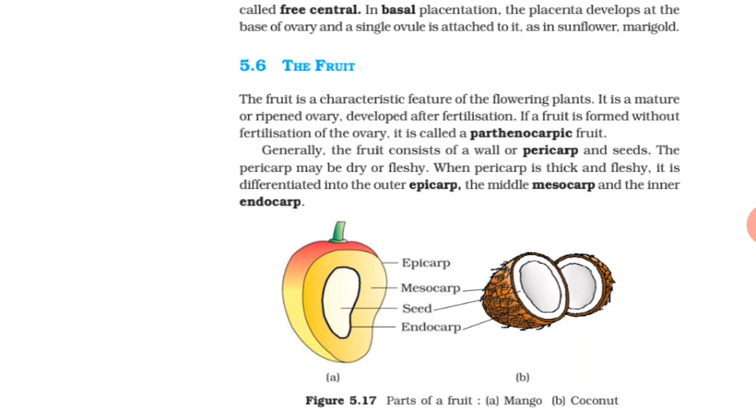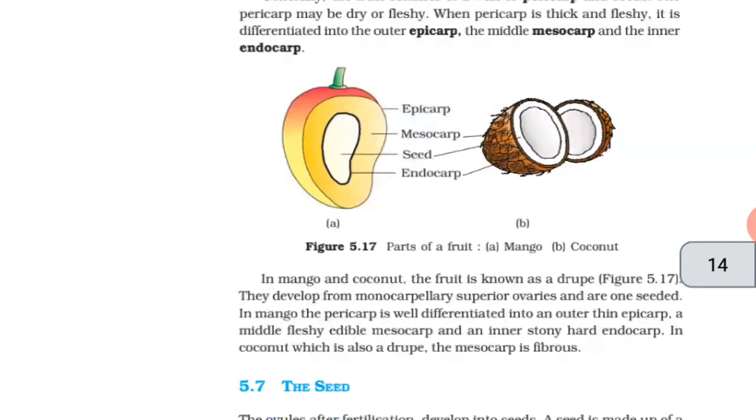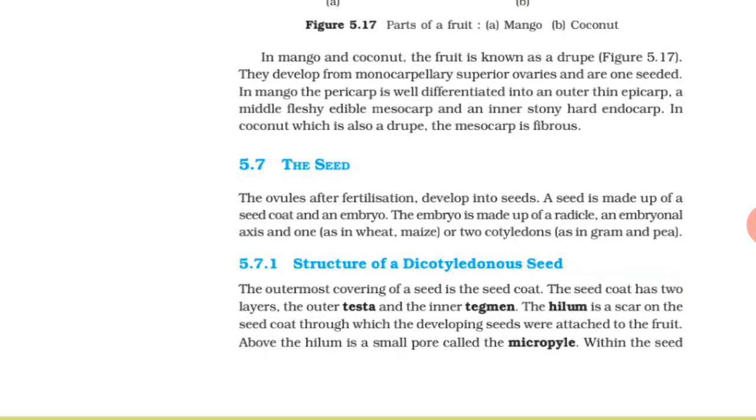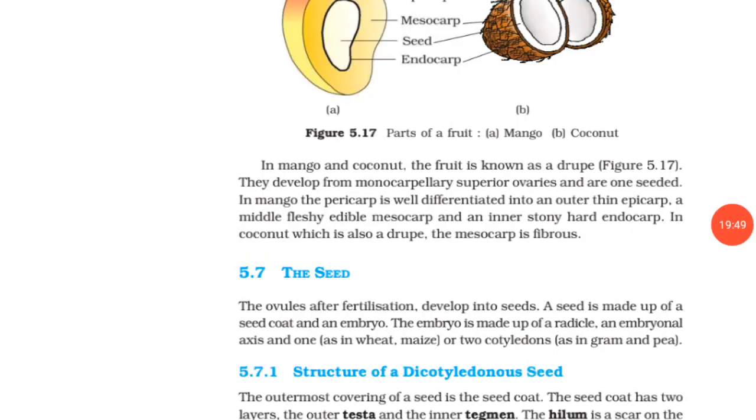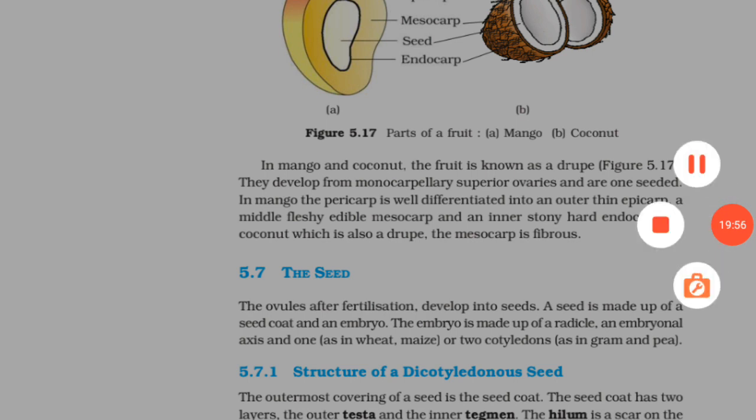When pericarp is thick and fleshy, it is differentiated into the outer epicarp, the middle mesocarp and the inner endocarp. In mango and coconut, the fruit is known as a drupe. They develop from monocarpillary superior ovaries and are one-seeded. In mango, the pericarp is well differentiated into an outer epicarp, a middle fleshy edible mesocarp and an inner stony hard endocarp. In coconut, which is also a drupe, the mesocarp is fibrous.